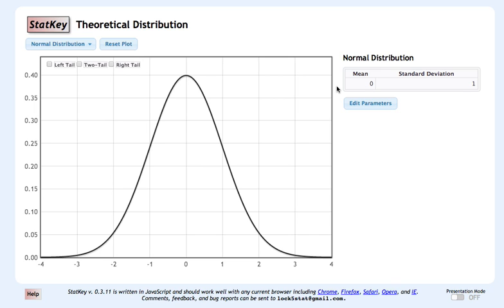For the first example, or example three, we're talking about a study where we learn 67% of women in a random sample view divorce as morally acceptable. They're trying to determine whether or not this provides evidence that more than 60% of women view divorce as morally acceptable.